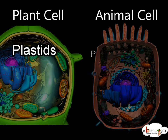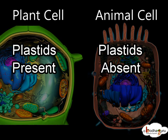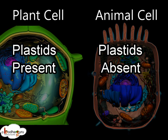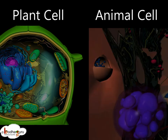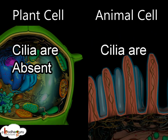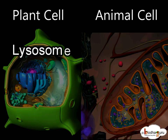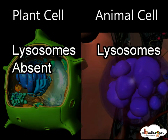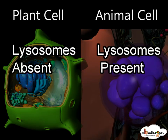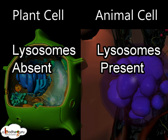Plastids are present in plant cells while they are absent in animal cells. Cilia are found in animal cells but not usually in plant cells. Lysosomes are present in animal cells only.